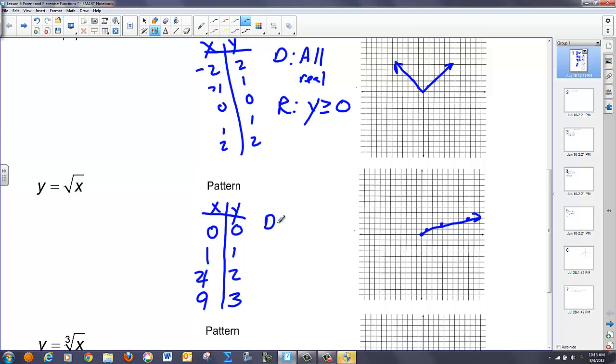Domain, in this case, my x's are limited. So I'm starting at 0 and going to the right forever. So I just say x is greater than or equal to 0 for my domain. And my ranges are limited as well. And y is greater than or equal to 0.